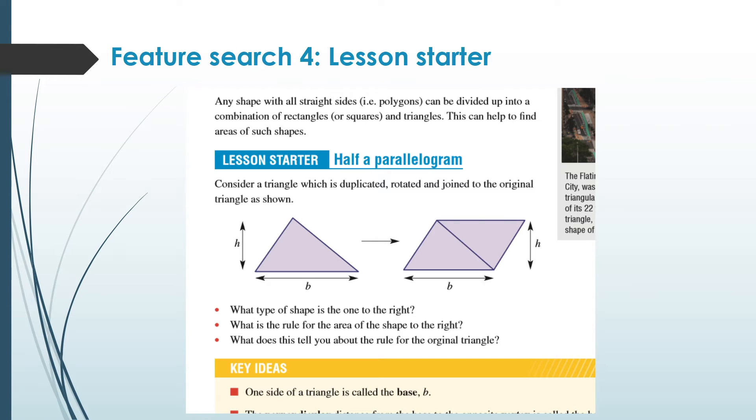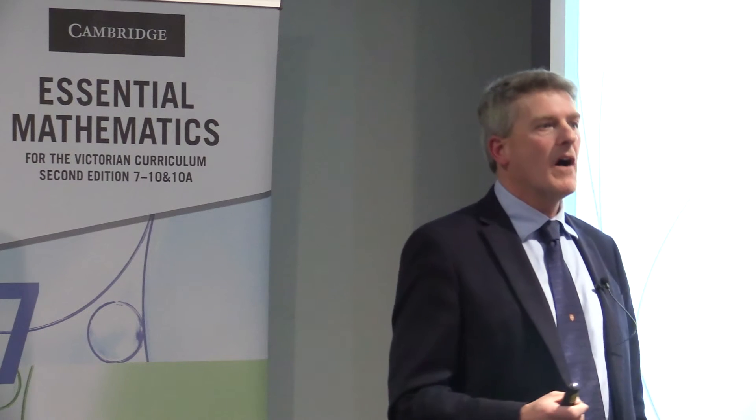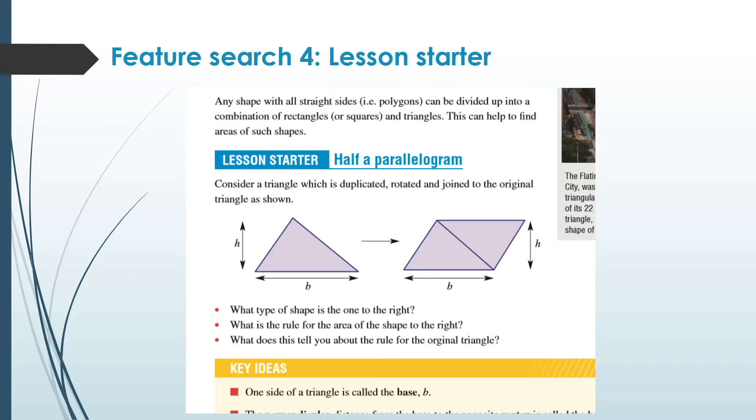One of the old features which we've updated slightly is the lesson starter. This is a new one for example where students are looking at doubling the size of a triangle through transformation of some form to form a parallelogram. And then if we already know that the area of a parallelogram is base times height, then that clearly tells us something about the area of a triangle. So it's a really nice way of coming up with the area of the triangle formula from the area of a parallelogram. So we have a few lead in questions that might help teachers create a short activity at the start of the lesson. And they are at the beginning, those types of things at the beginning of every section as well.